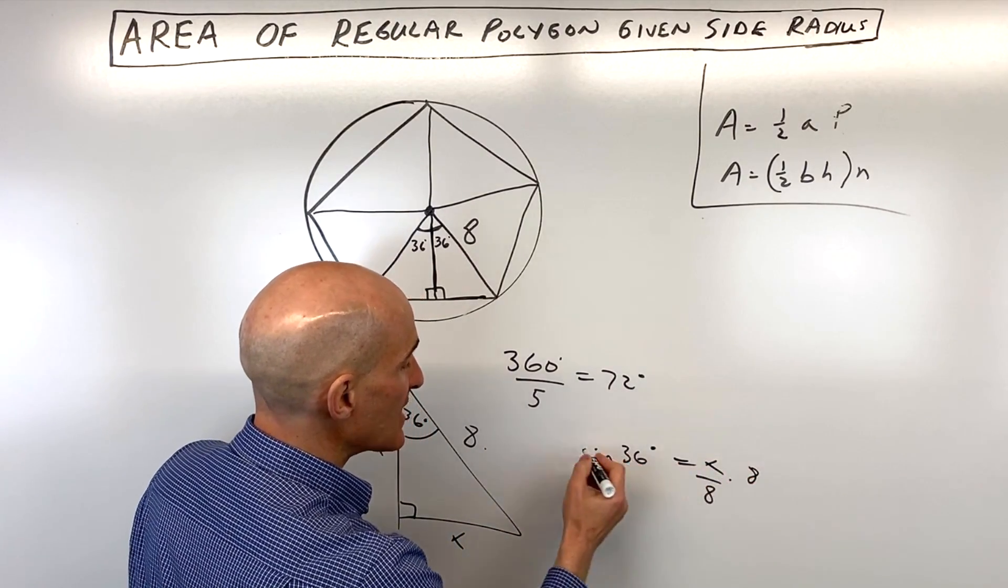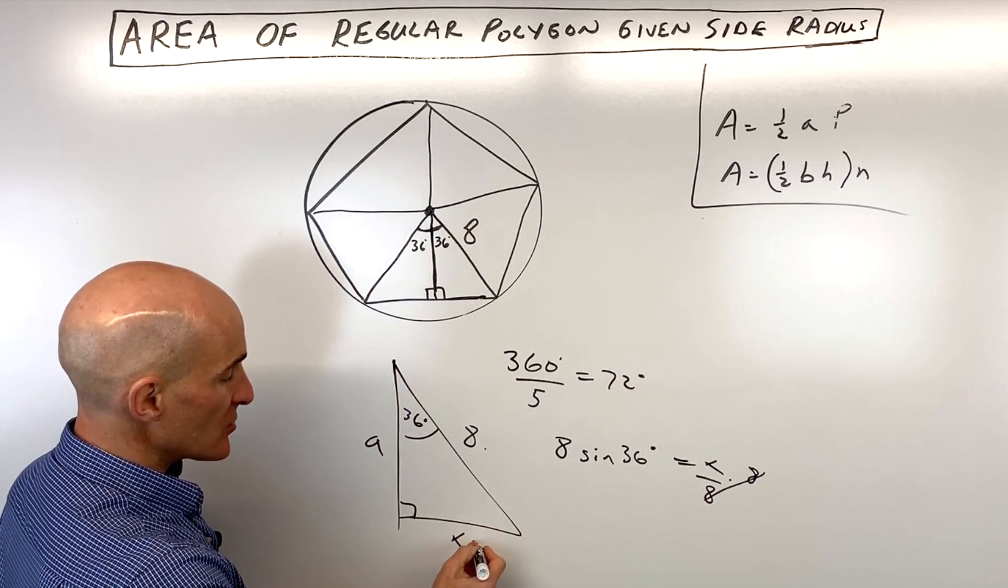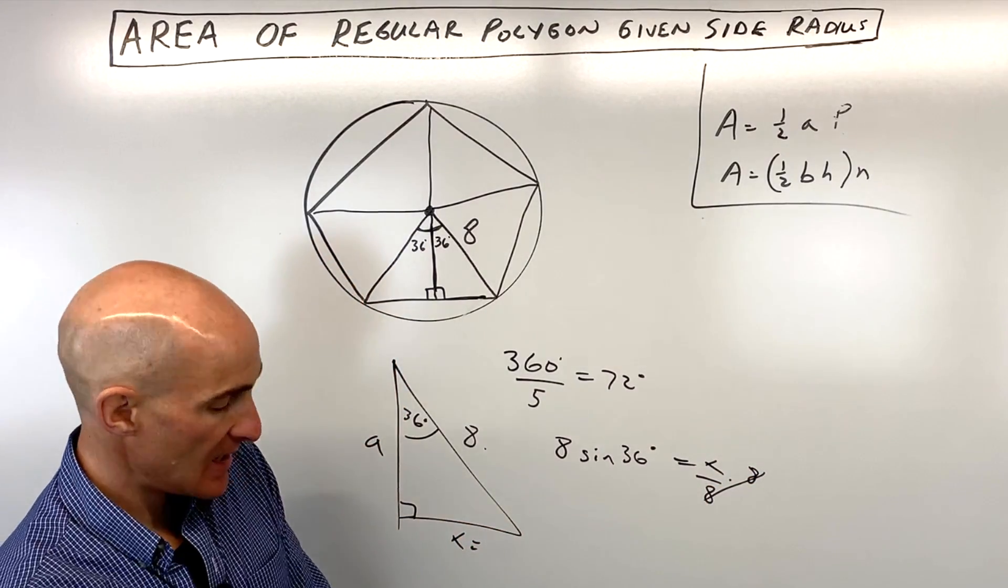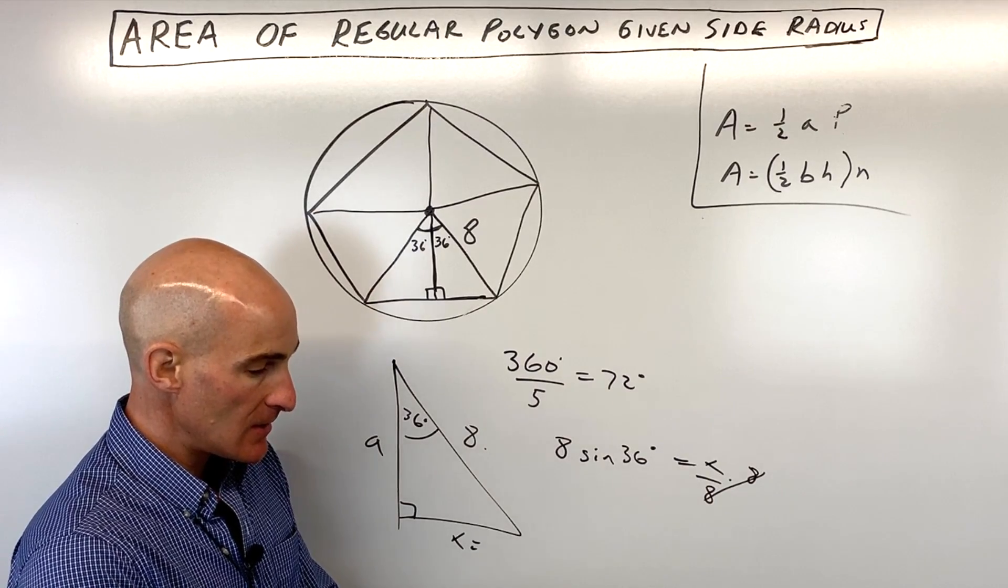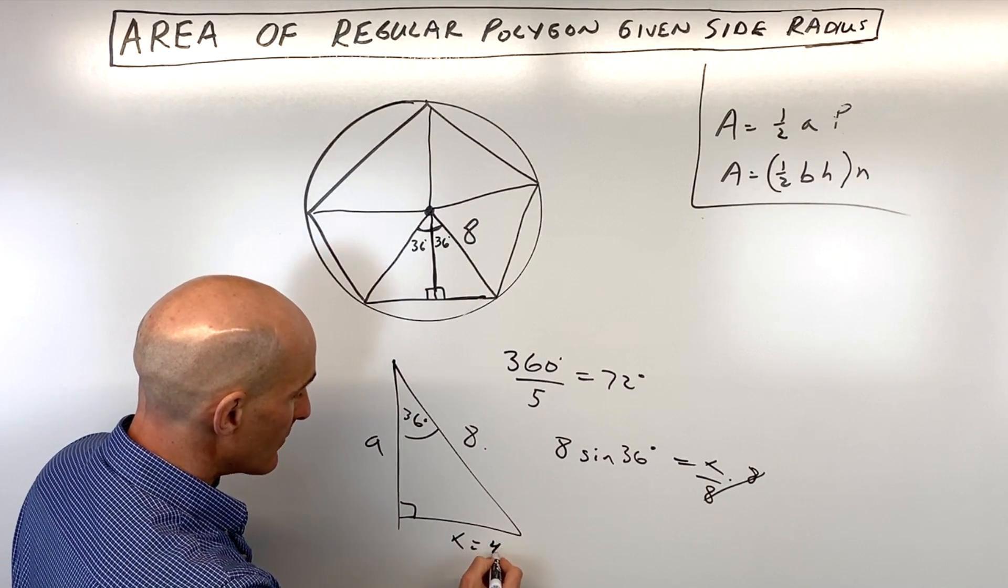If we multiply both sides by 8, that's going to give us X here. So let's see what that comes out to. It's 8 times the sine of 36, which is about 4.7. I'm just rounding.